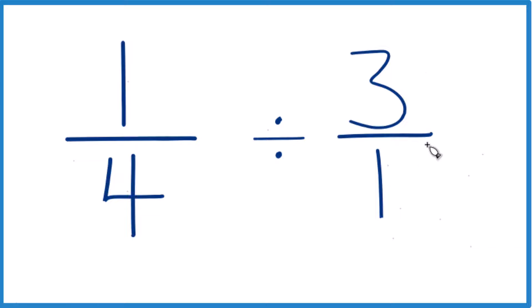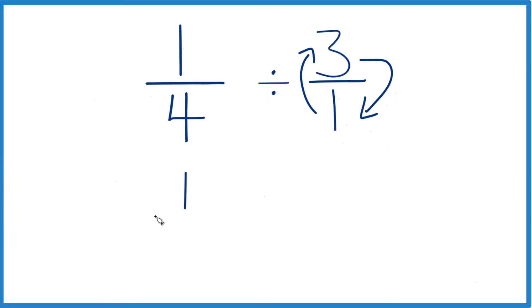We're going to take the reciprocal of three over one. So we just move the numerator to the bottom and the denominator to the top. That way we take our one-fourth, and instead of division, we multiply by the reciprocal. So we have one over three. That's just one-third.